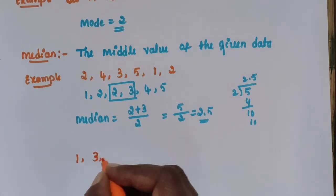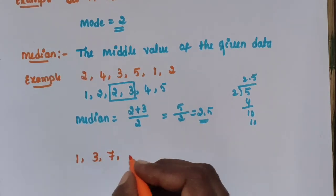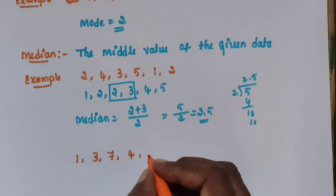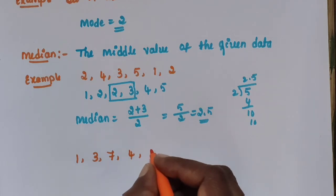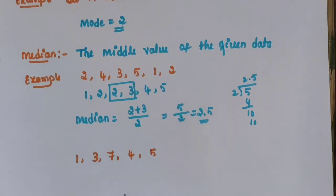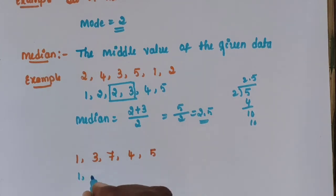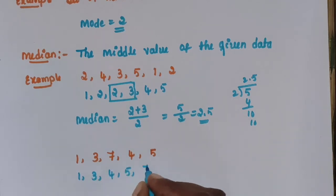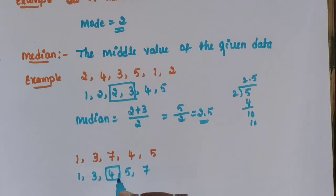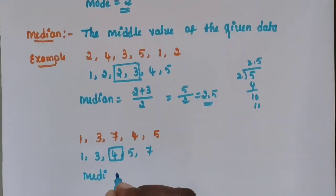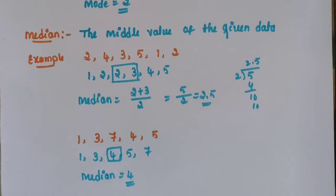Another example: 1, 3, 7, 4, 4, 5. Arrange the numbers in ascending order: 1, 3, 4, 5, 7. There are 5 numbers, so the middle number is 4. Then median is equal to 4.